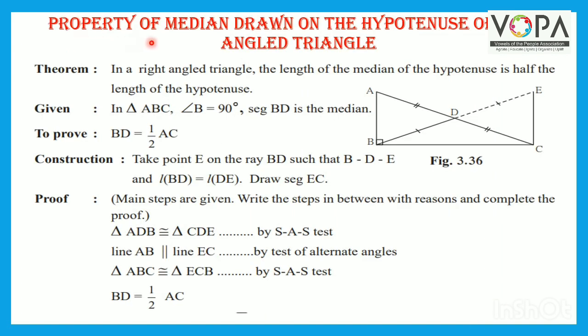Property of median drawn on the hypotenuse of right angle triangle. Theorem: in a right angle triangle, the length of the median of the hypotenuse is half the length of the hypotenuse.